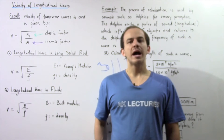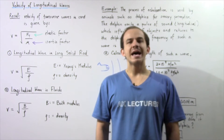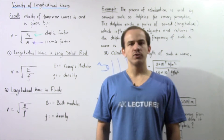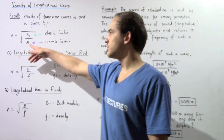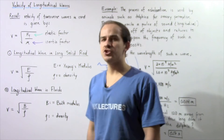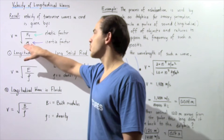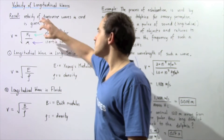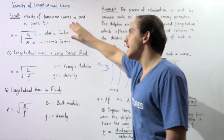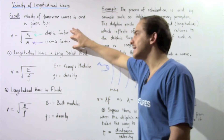In the previous lecture, we derived an equation for the velocity of transverse waves as they travel through a chord. The formula for the velocity is given by the square root of the tension inside our chord divided by mu, which is the mass per unit length. The numerator of our fraction is known as the elastic factor and our denominator is known as the inertia factor.